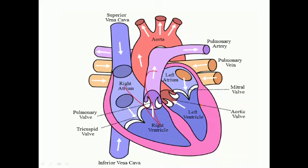An important point about the contraction and relaxation of the heart is that when the heart is contracting in the systolic phase, both ventricles are contracting at the same time. The right and left ventricles are contracting simultaneously and sending blood into the main arteries — the pulmonary artery and the aorta. From the right ventricle, blood is pushed into the pulmonary artery for oxygenation, and the oxygenated blood from the left ventricle is pushed into the aorta for pumping to the whole body.